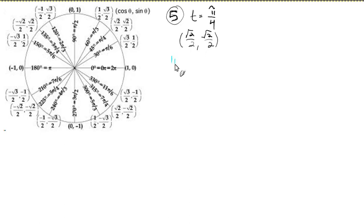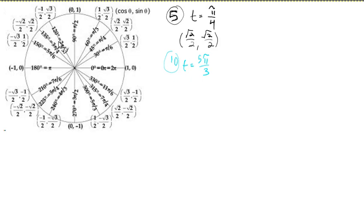You can do another one, number 10, where T is five pi over three. Here's pi over three — a unit of 60 degrees, you can think of it that way. So double that, we're at two pi over three. Triple that, we're at three pi over three, which simplifies to pi. Four pi over three is right there, and five pi over three is right here. The (x, y) is one-half, negative root three over two.